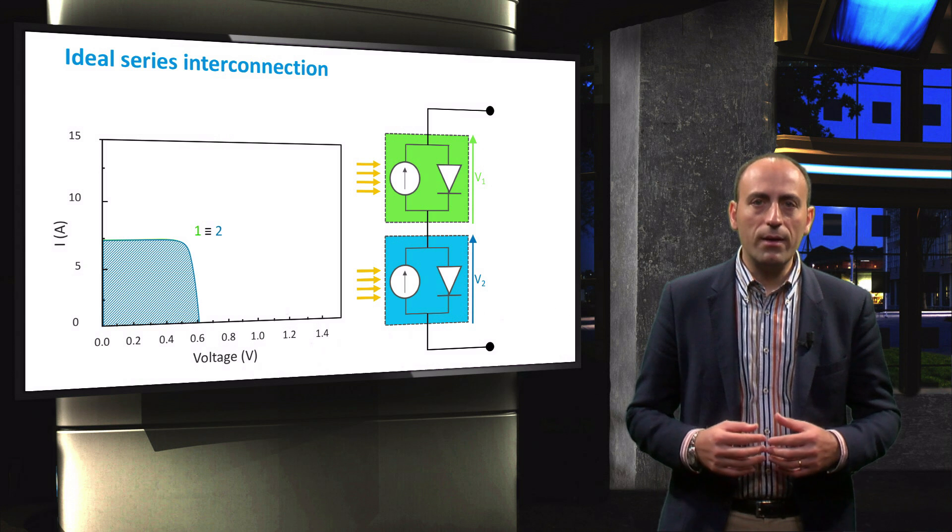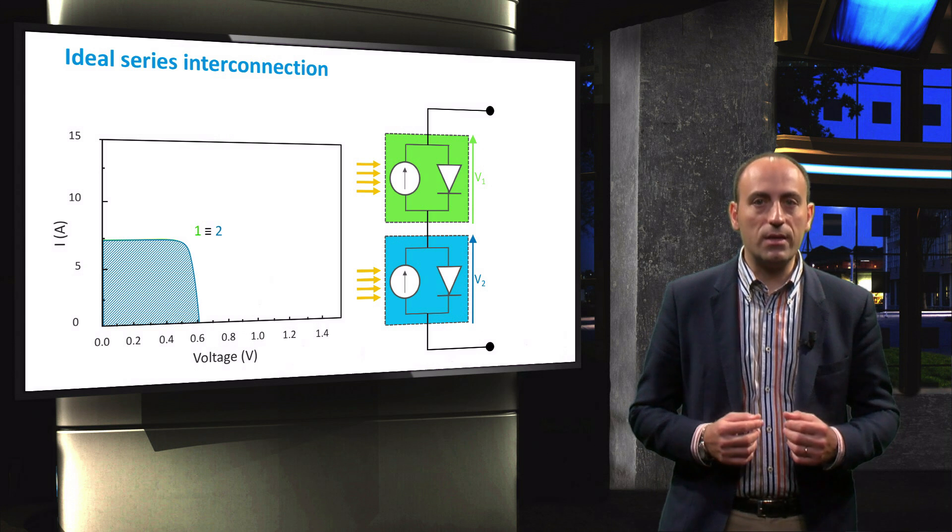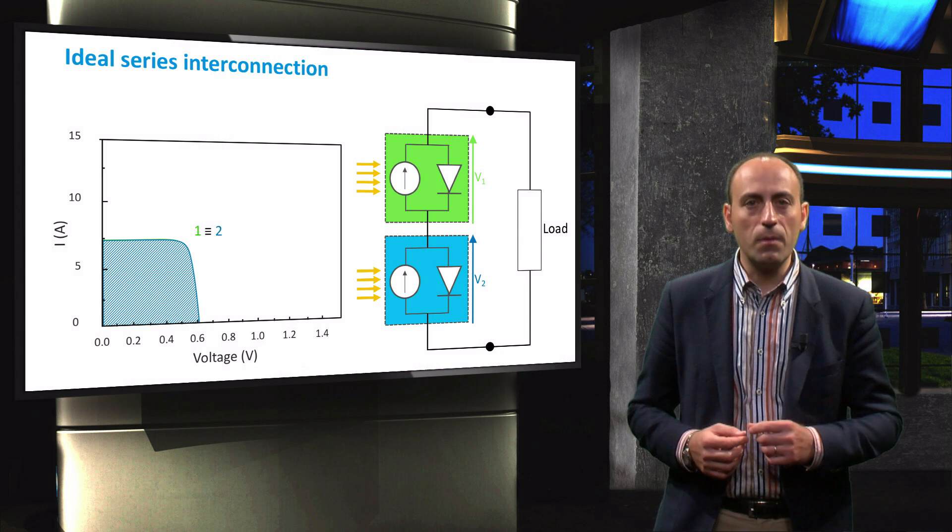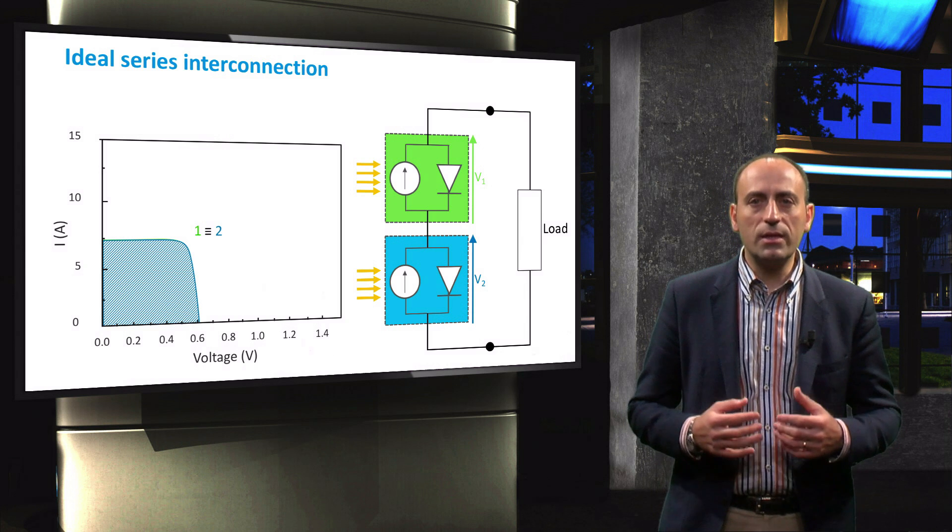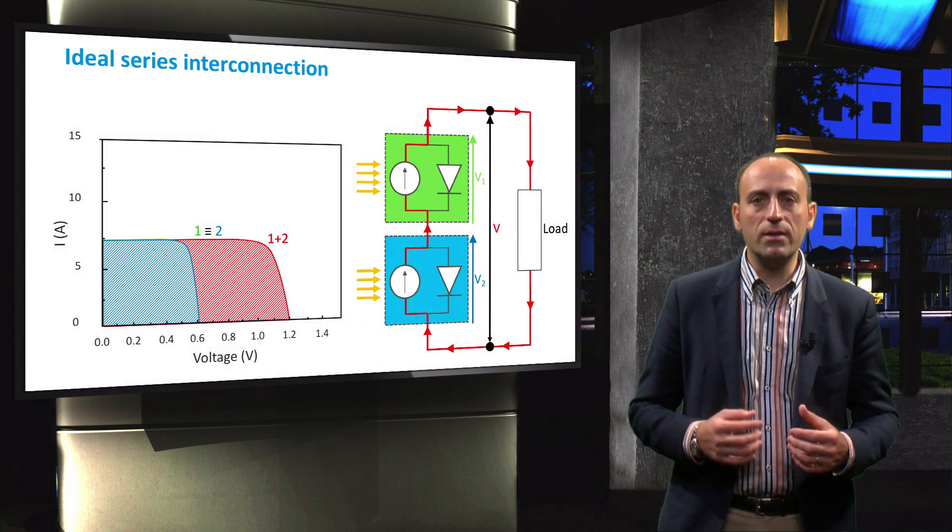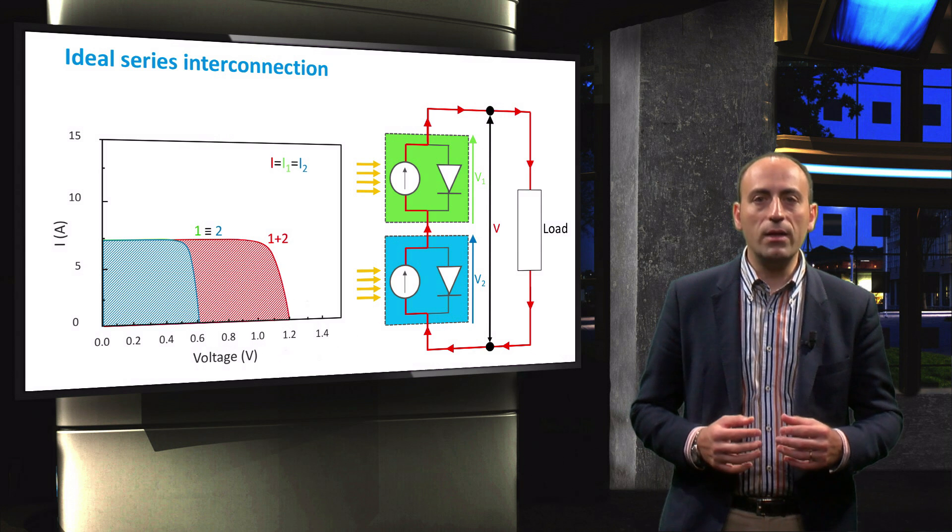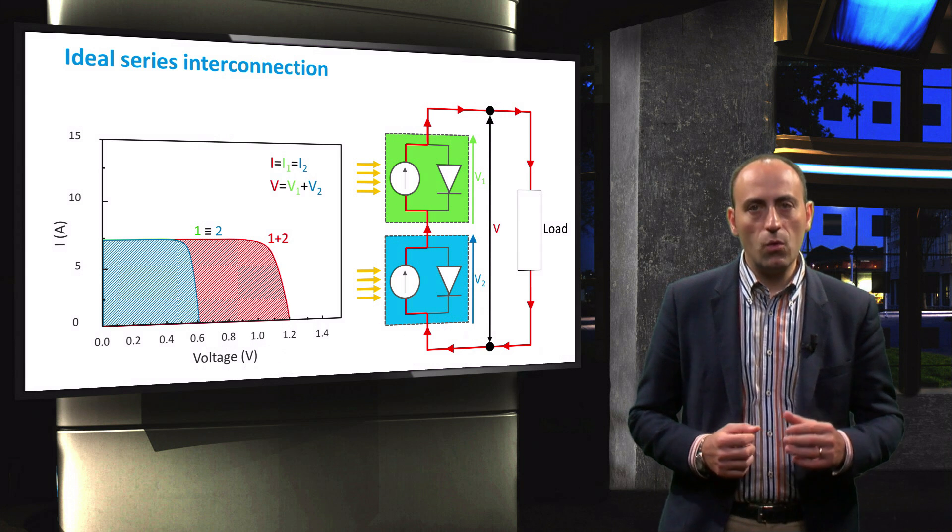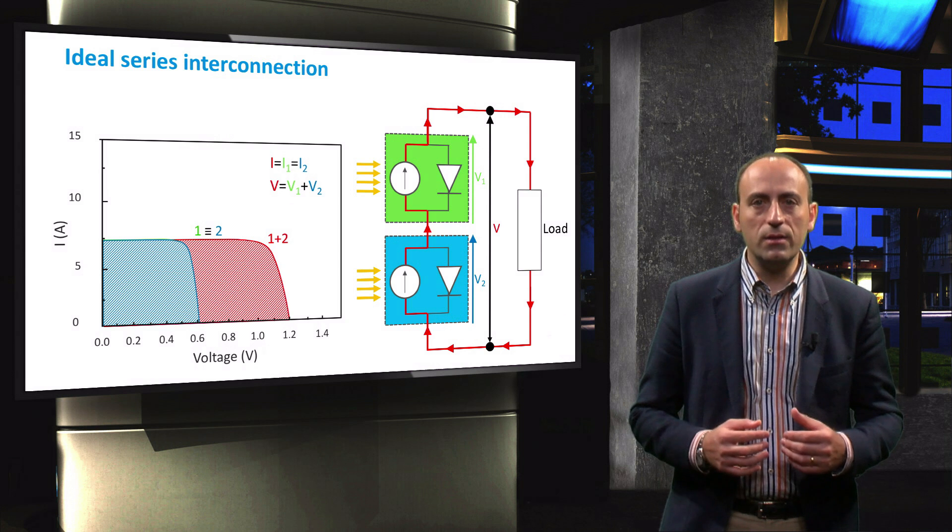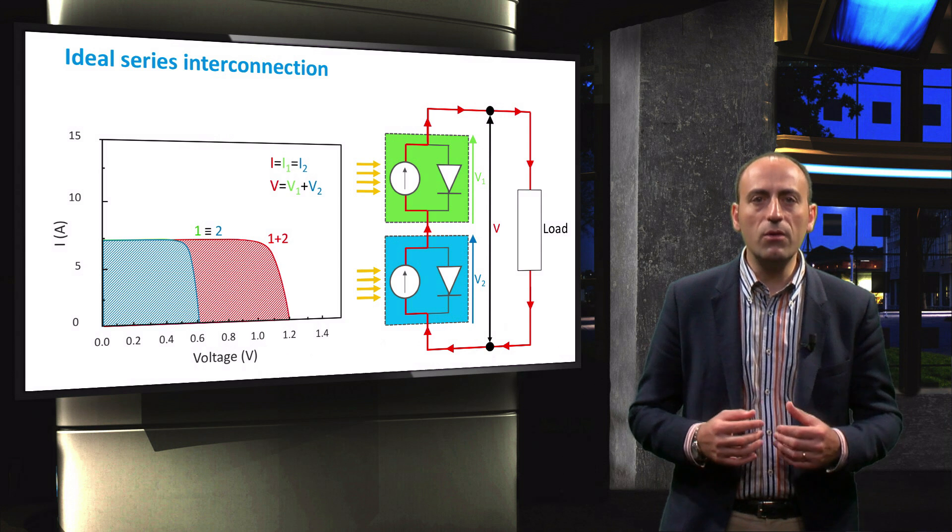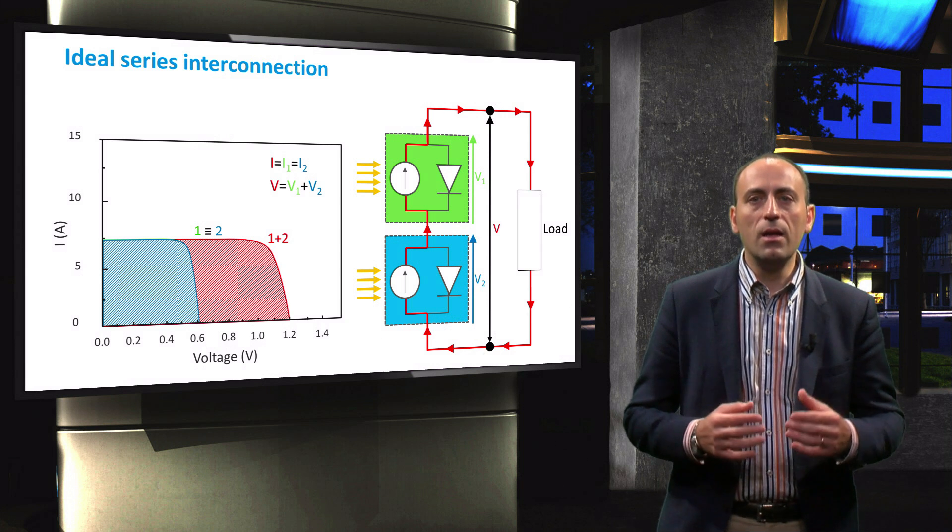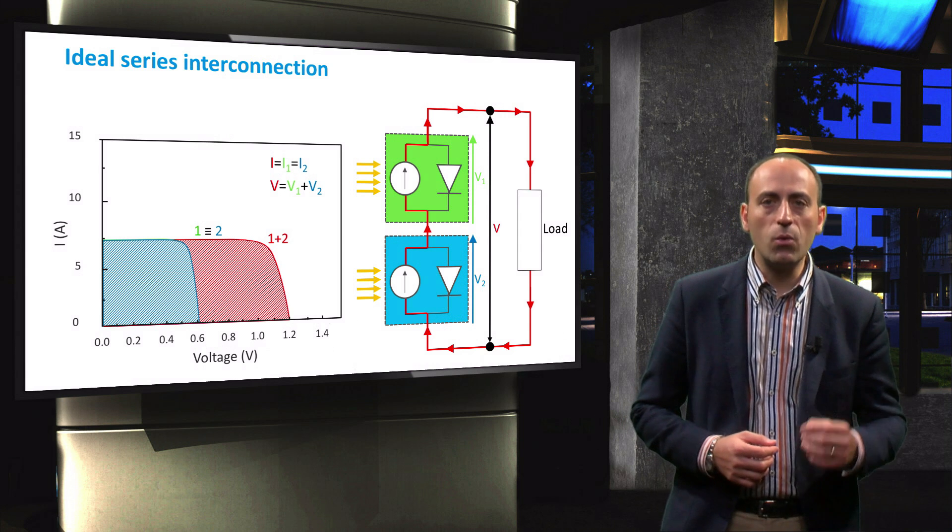What happens when we connect both cells in series and place a load in the circuit? We can see that the current flowing through cell 1 and cell 2 is the same, while the voltages add up. So a module with two connected series cells will deliver, with respect to a single cell, the same amount of current and twice the voltage.